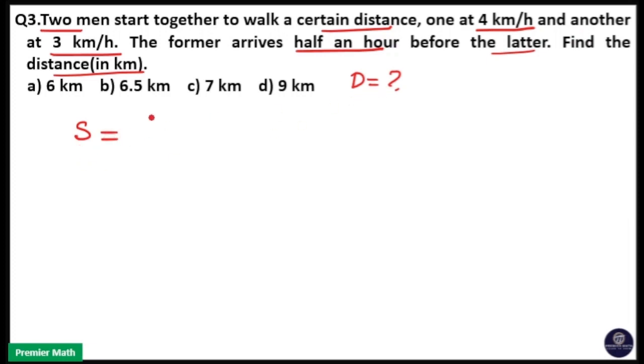So speed ratio here - one walks at 4 km per hour and another walks at 3 km per hour. Then time ratio will be inverse of speed, that is 3 by 4.